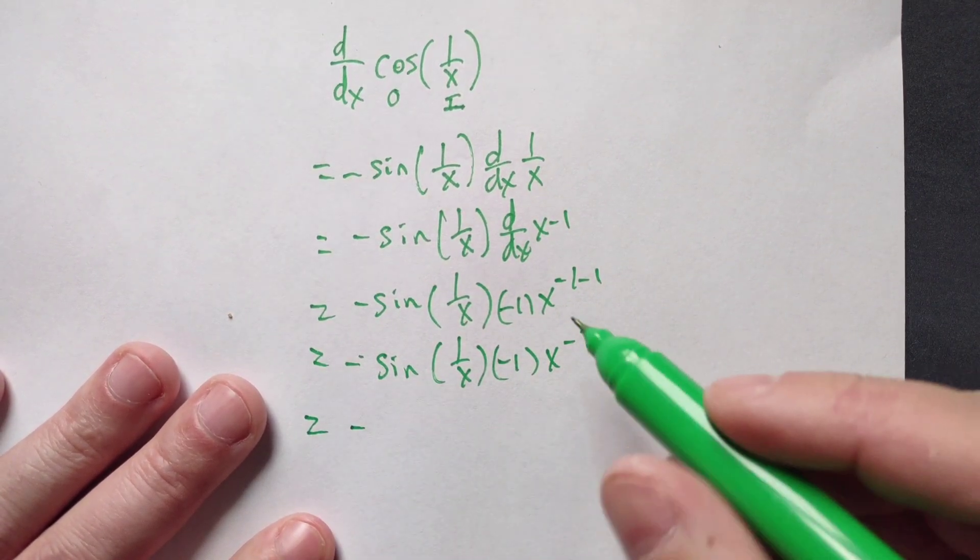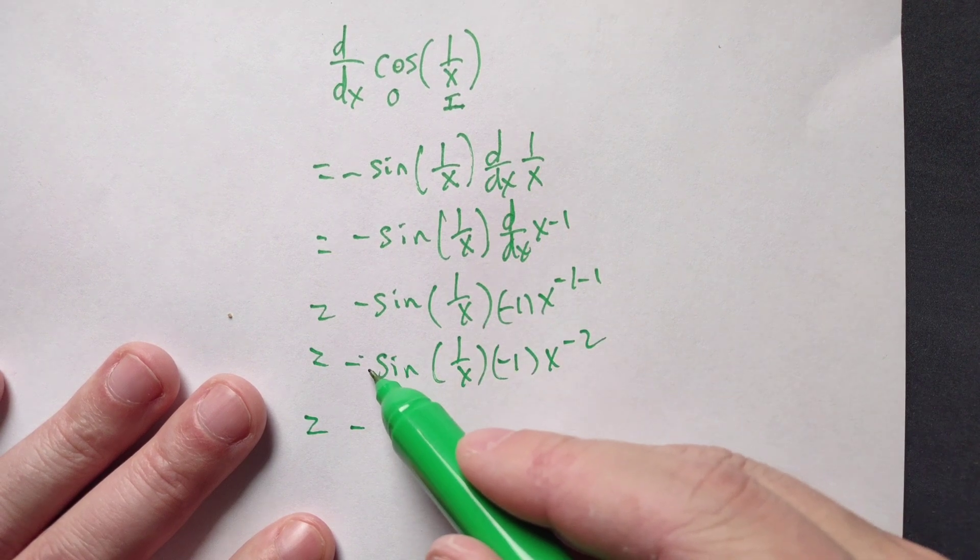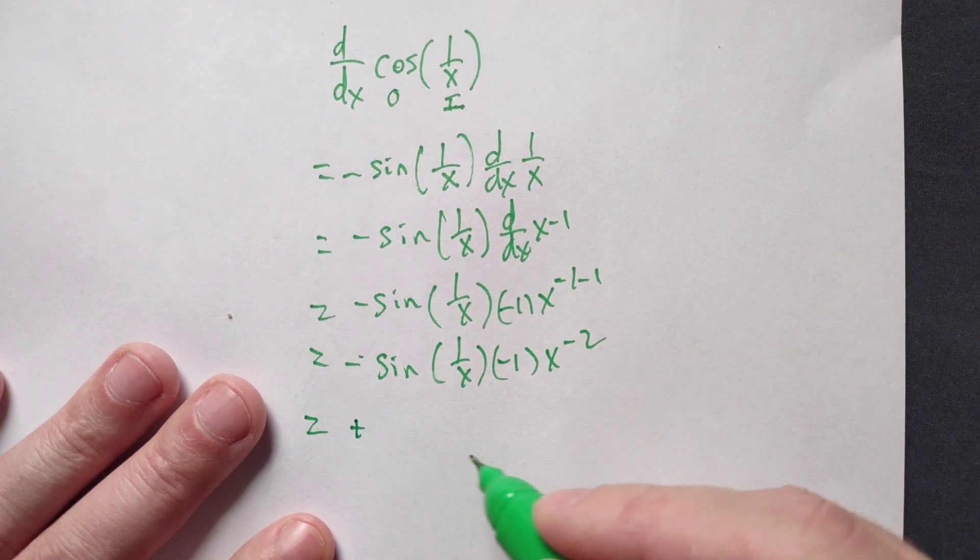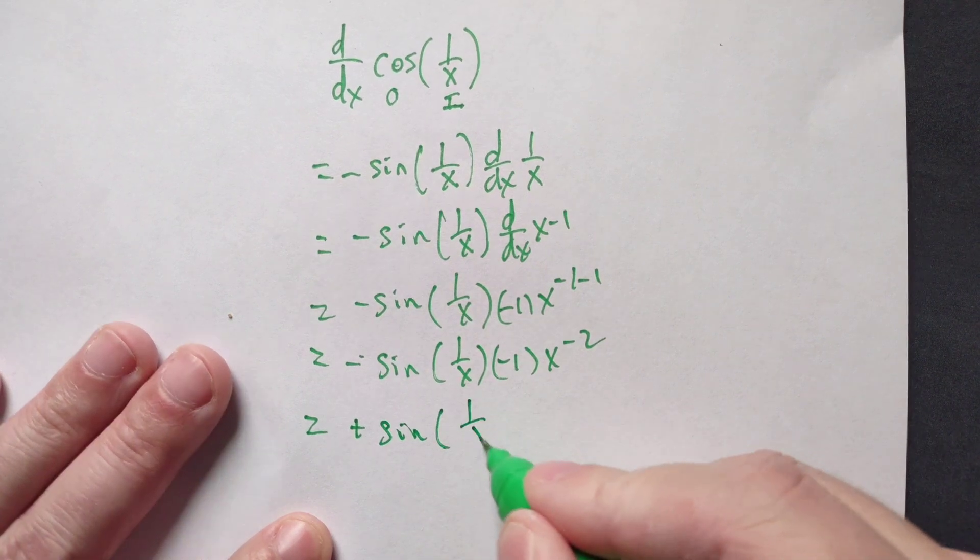Continue, so then you get negative. Now look, there's a negative 1 here and a negative 1 of sine, so it becomes altogether a positive sine of 1 over x.